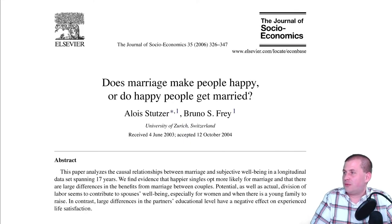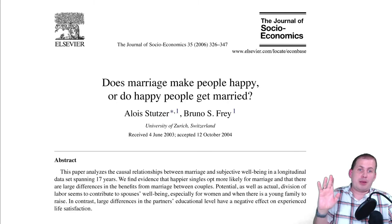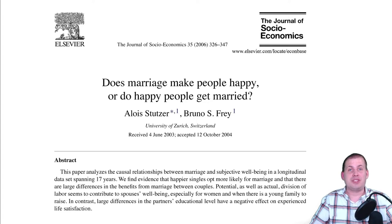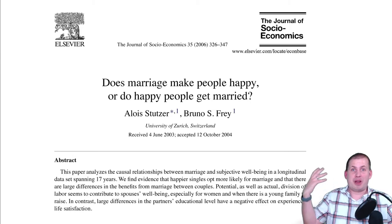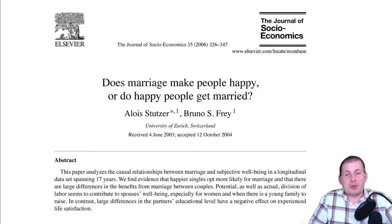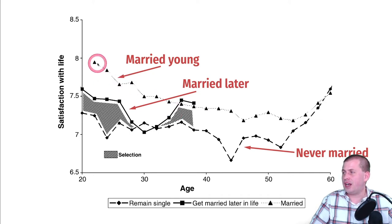A good example is this paper from the Journal of Socioeconomics, which asked: does marriage make people happy, or do happy people get married? They're trying to study the impact of marriage on happiness, but they can't randomly assign people to get married. People who get married are fundamentally different from those who never marry — there are underlying confounding variables. They studied three groups: single people, people who marry early, and people who marry later in life.